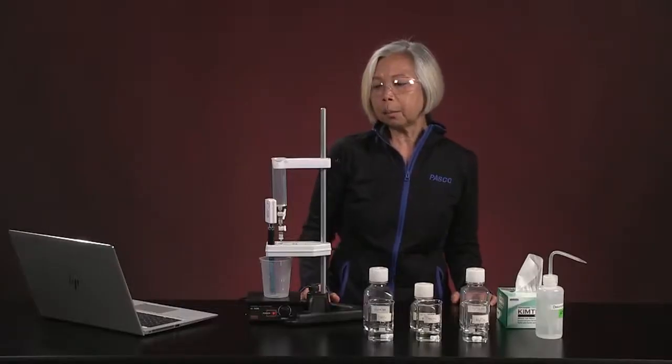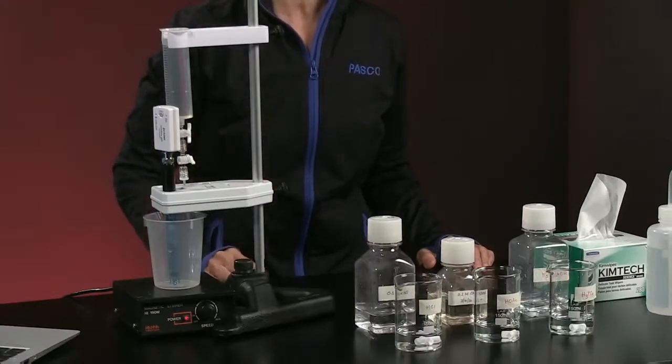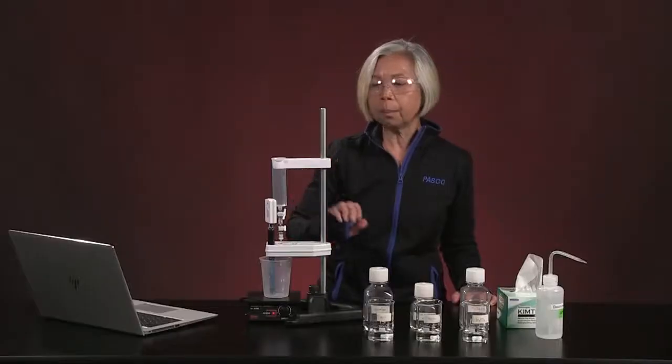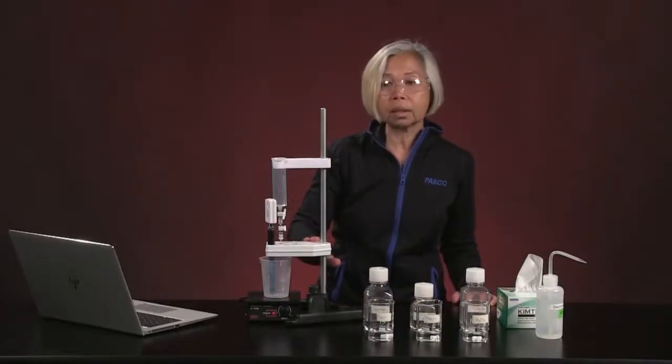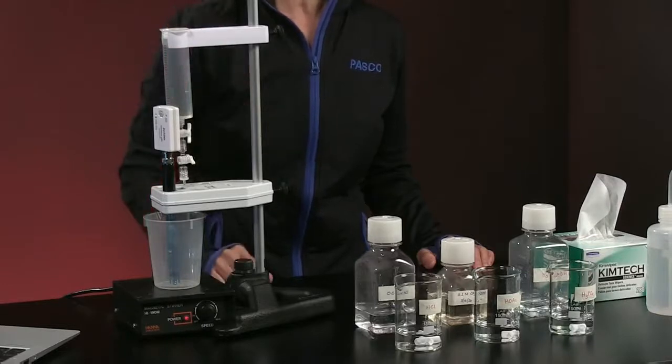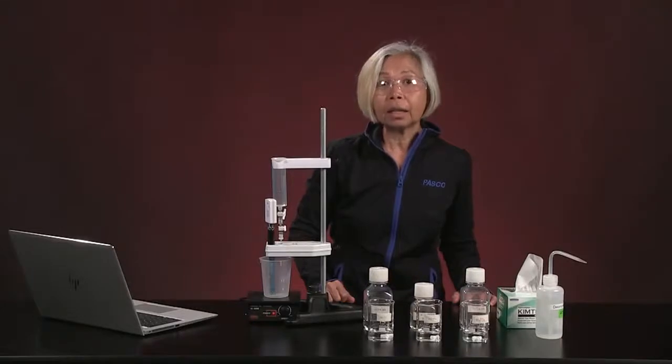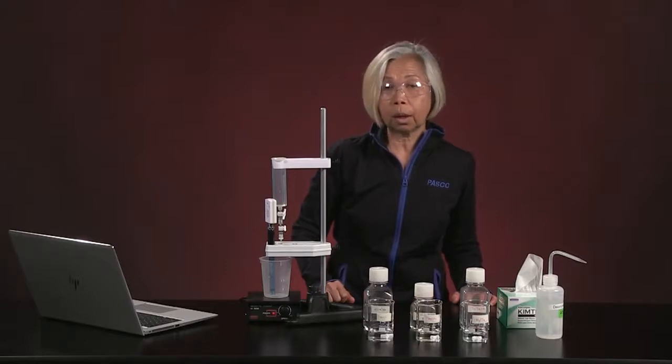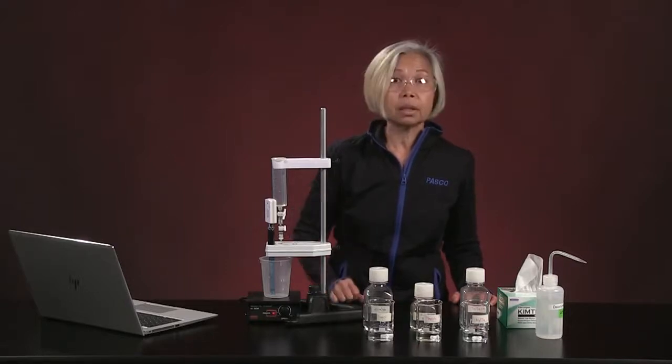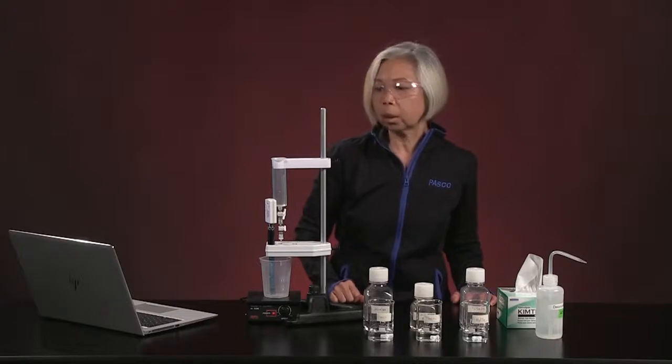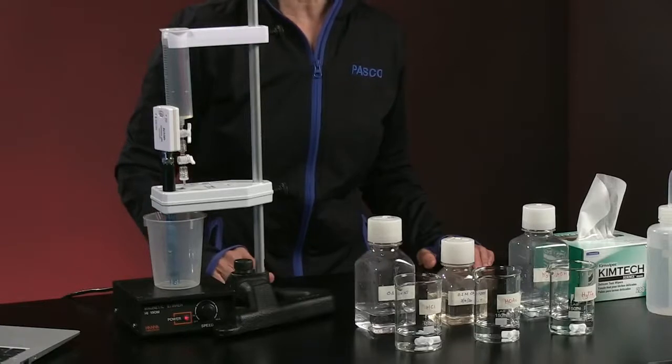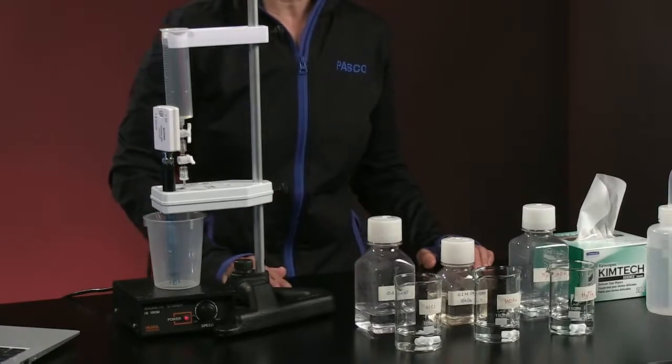As you can see, to set up this lab, we are using a wireless drop counter, as well as a wireless pH sensor. We have set up a syringe assembly that comes with a wireless counter, and in that syringe assembly, we have filled it with 0.1 molar sodium hydroxide. That is our titrant. That sodium hydroxide has been prepared from solid sodium hydroxide pellets and has been standardized at 0.1 molar concentration. The pH sensor itself has been rinsed with water and is ready to go.